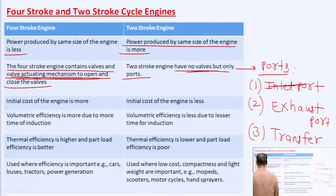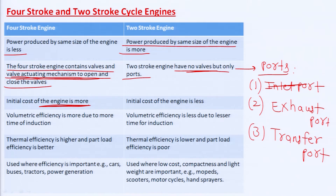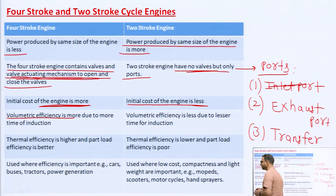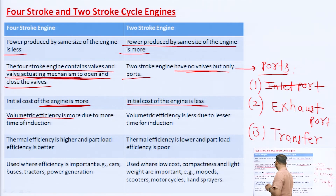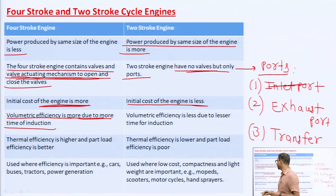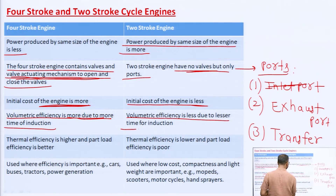Regarding initial cost: the four-stroke engine's initial cost is more compared to the two-stroke engine — in other words, the four-stroke engine is costlier than the two-stroke engine. Volumetric efficiency is the ratio of actual volume to swept volume. Volumetric efficiency is more in the four-stroke engine due to more time for induction — the induction time for the air-fuel mixture is greater, so its volumetric efficiency is higher. But in the case of the two-stroke engine, volumetric efficiency is less due to lesser time for induction.